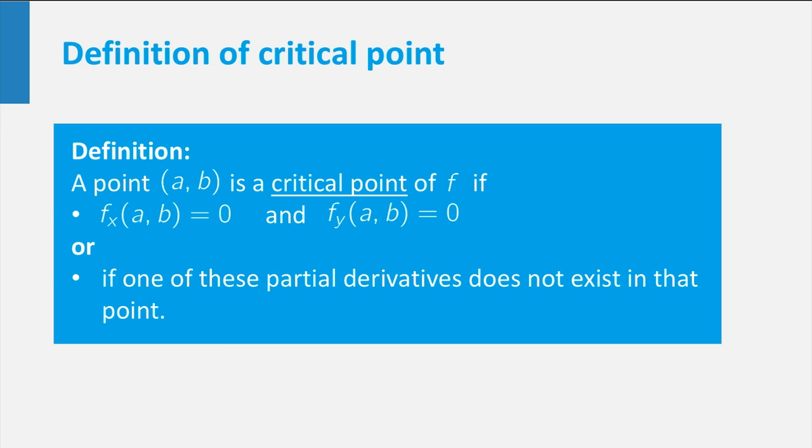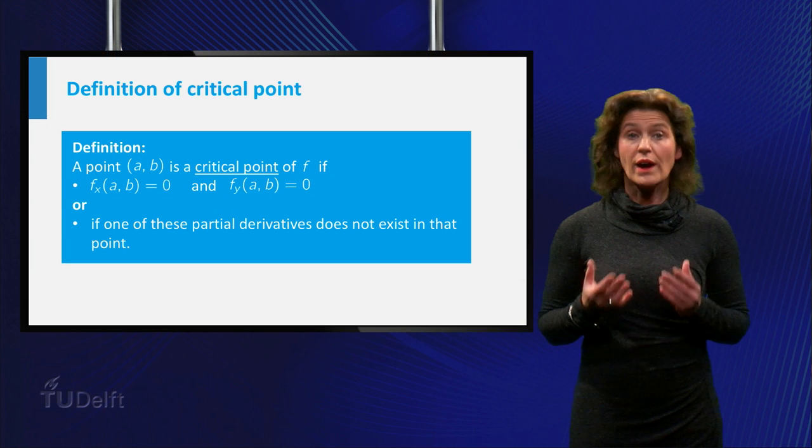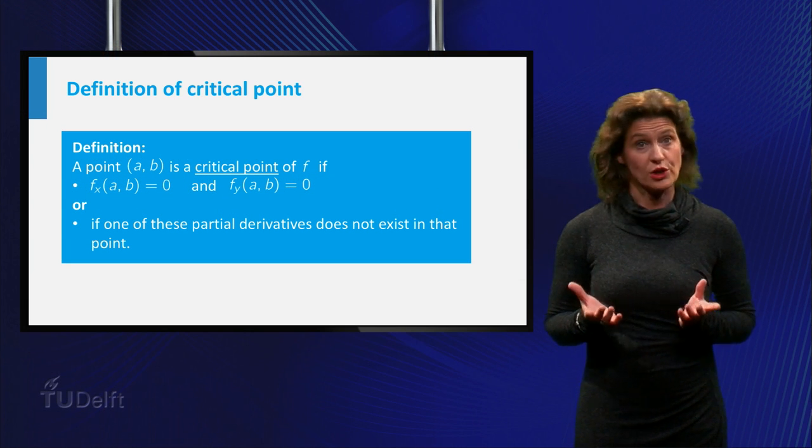So the full and exhaustive definition of a critical point is here. A point is a critical point if its first order partial derivatives at that point are both equal to 0, or one of the partial derivatives does not exist.